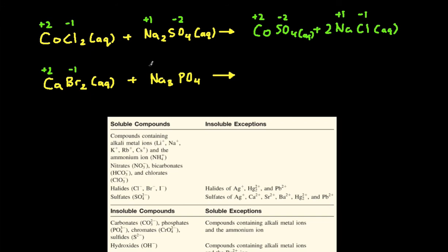Calcium is positive 2. Br is negative 1. Na is positive 1. And then phosphate is a polyatomic ion of a negative 3 charge.